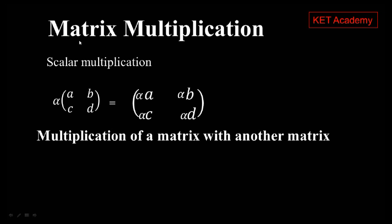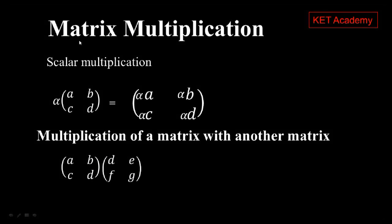Now, multiplication of a matrix with another matrix is a bit more complicated, and many things are supposed to be taken into consideration, such as the order of the matrix. If we are given a matrix to be multiplied by another matrix, the order may vary, but there are conditions that are going to guide us in order to do the multiplication.